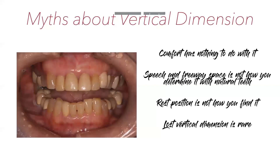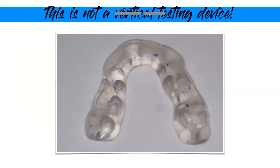The last myth is that a piece of plastic between somebody's teeth is a testing device to determine whether or how much to open vertical dimension. Typically, when a dentist sticks a piece of plastic between somebody's teeth, they're diagnosing them with an acute acrylic deficiency — meaning, 'I don't know what to do, so let me put a piece of plastic in there and hopefully that'll seem like I'm doing something.'